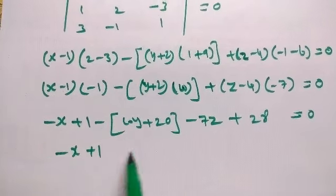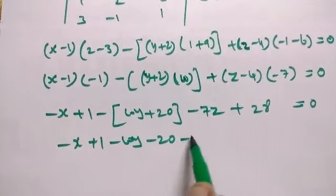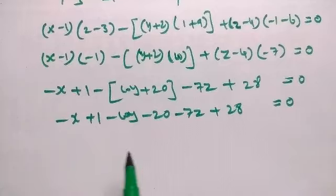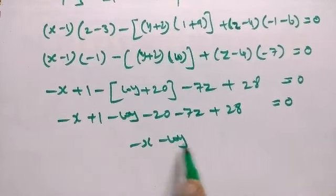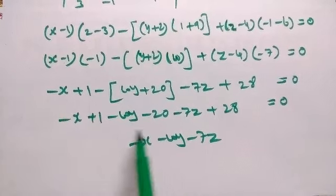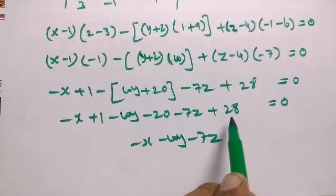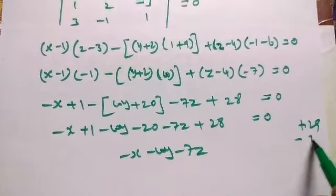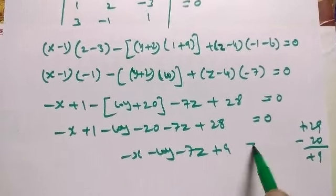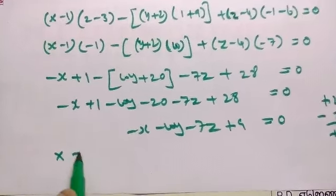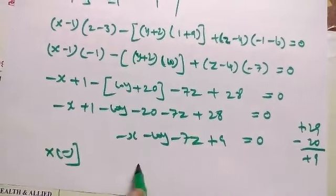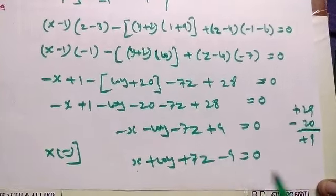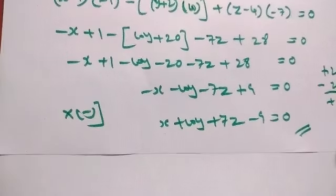-x + 1, so the minus will change the sign, -10y - 20 - 7z + 28 = 0. So x terms, y terms, z terms, constant terms on the other side: -x - 10y - 7z, constant add to other side, so now 1 + 28 is 29, 29 - 20 is 9 equal to 0. So first term is that, so now minus. We multiply both sides by -1: x + 10y + 7z - 9 = 0.